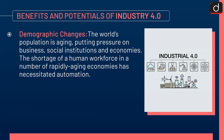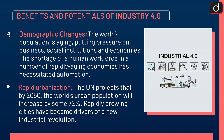Next is demographic changes. The world's population is aging, putting pressure on businesses, social institutions, and economies. The shortage of a human workforce in a number of rapidly aging economies has necessitated automation. Next is rapid urbanization: the UN projects that by 2050, the world's urban population will increase by some 72%, and rapidly growing cities have become drivers of a new industrial revolution.